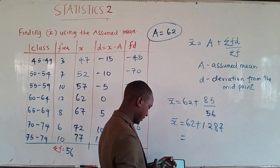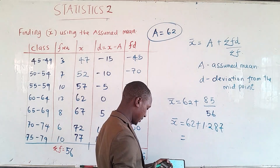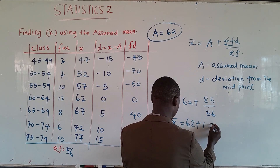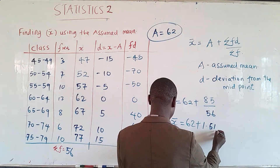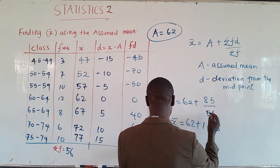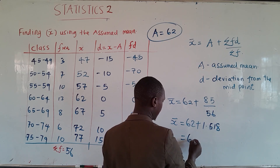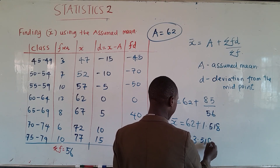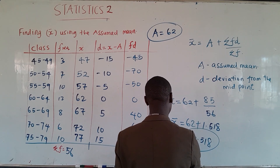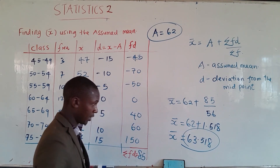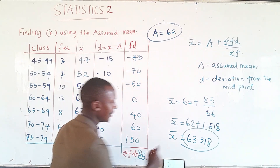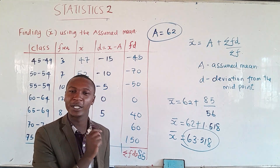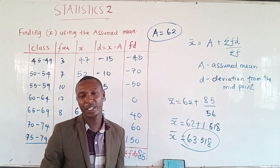So: 85 ÷ 56 = 1.518. Therefore x-bar = 62 + 1.518 = 63.518. Notice that 63.518 is close to 62, which is our assumed mean. Whenever you find the assumed mean, make sure you select it properly — the final answer should be reasonably close to it.